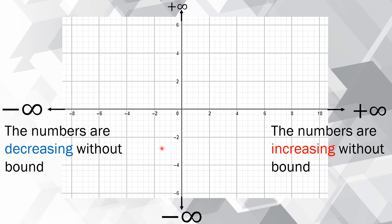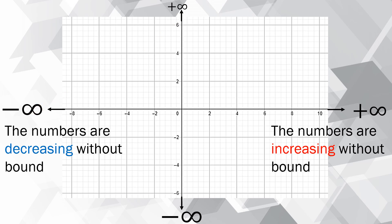Infinity symbols are not real numbers — they are just behavior describing what is going on with the numbers. Infinity is not a number. If numbers are not countable or cannot be listed, then the number of elements would be infinite.